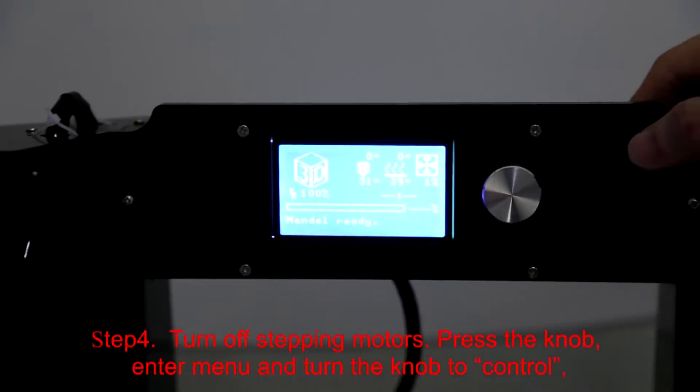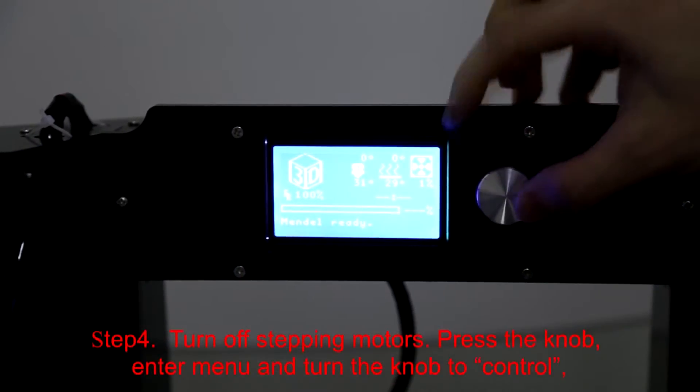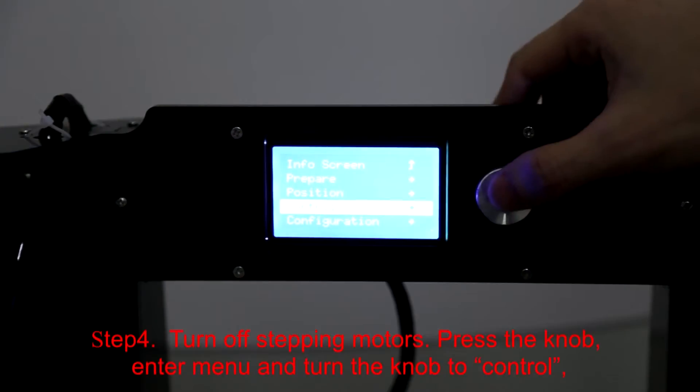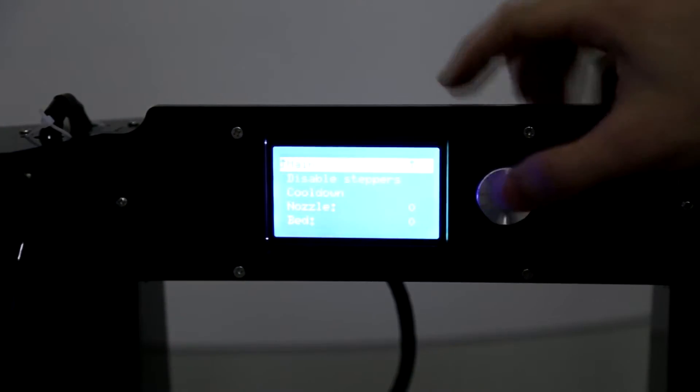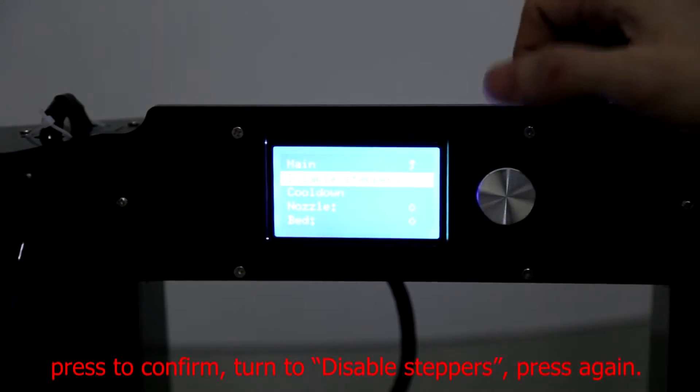Step 4: Turn off the stepper motors. Press the knob to enter the menu and turn the knob to Control. Press to confirm, turn to Disable Steppers, and press again.